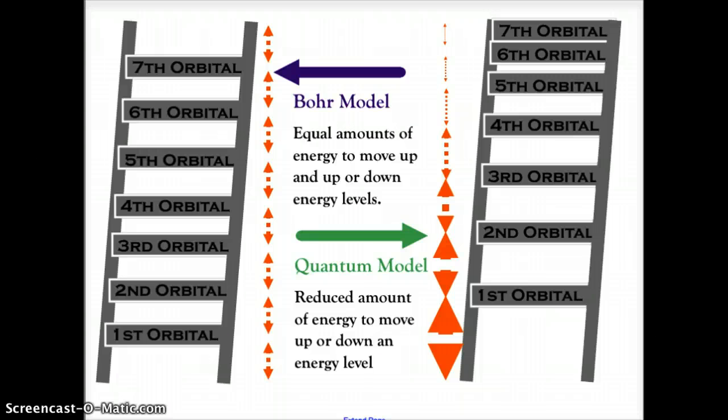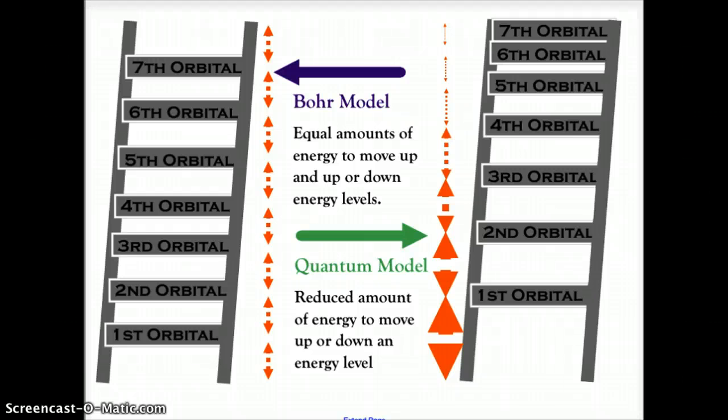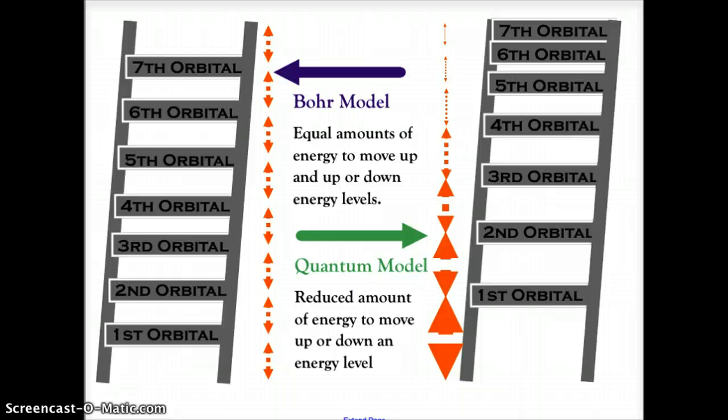However, in the quantum model, we understand that each orbital level takes less energy to move the electron. To move the electron off of the first orbital level takes a greater amount of energy than it does to move an electron off of the 4th, 5th, 6th, or 7th orbital.